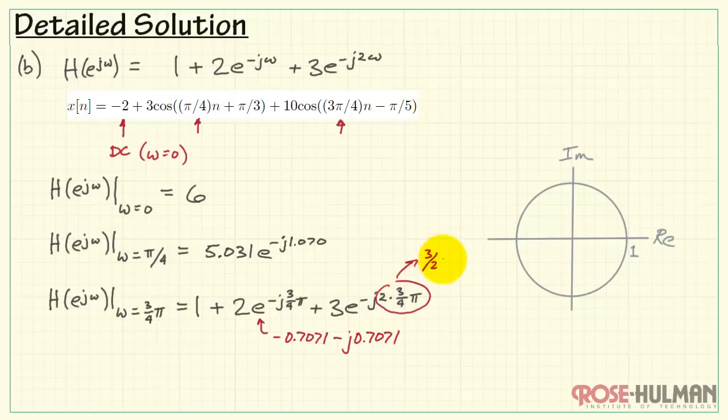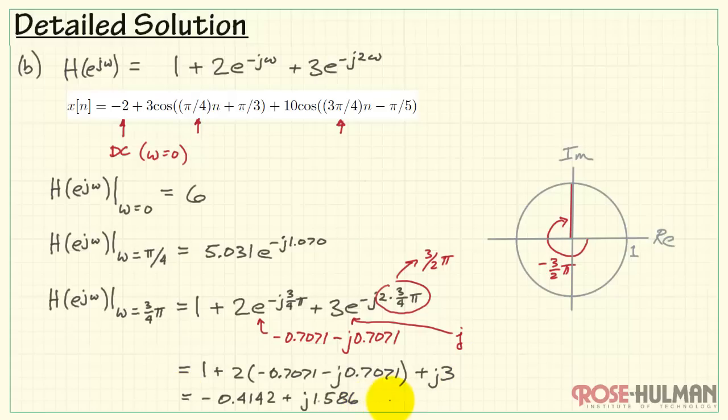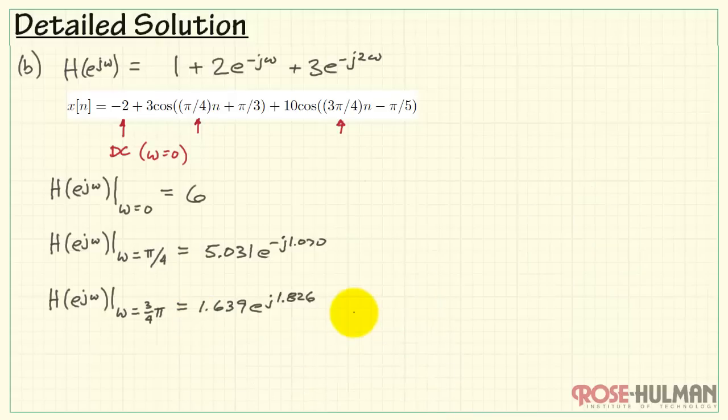This frequency, 2 times 3 quarters pi, well, that's going to amount to 3 halves pi. When we account for the negative sign, we get an angle that takes us from minus pi all the way around to minus 1 and 1 half pi. This complex value, then, is simply j. And as before, we can add the real and imaginary parts and then convert that to polar form. And now we have the response at that frequency associated with our third component.